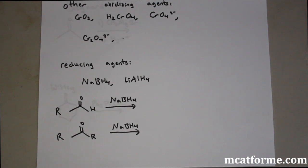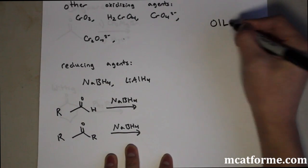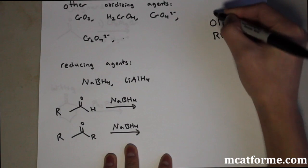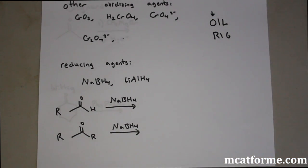We saw that CrO3 and PCC were some common oxidizing agents. Remember, oxidizing agents are something that causes another reaction to be oxidized. Oxidized means it loses electrons - remember OIL RIG. Oxidation will lose electrons or lose hydrogens.